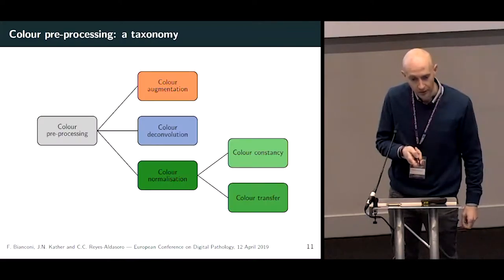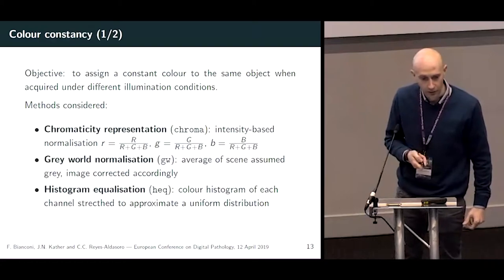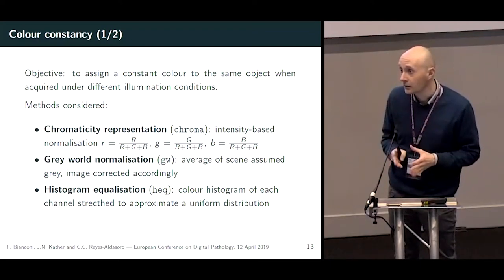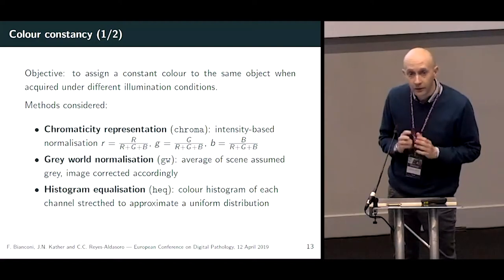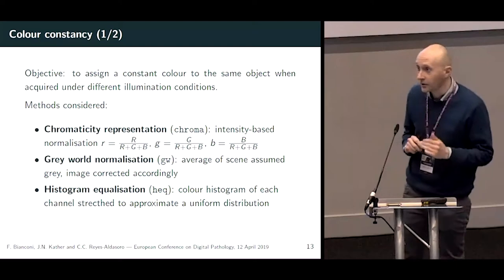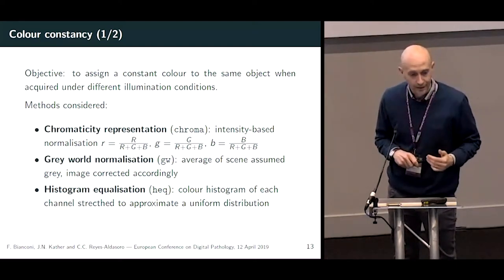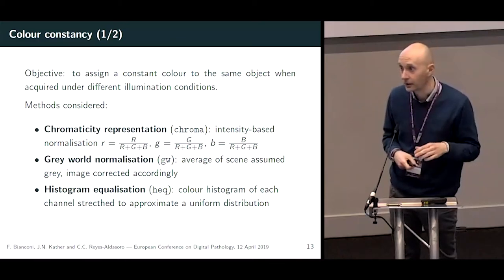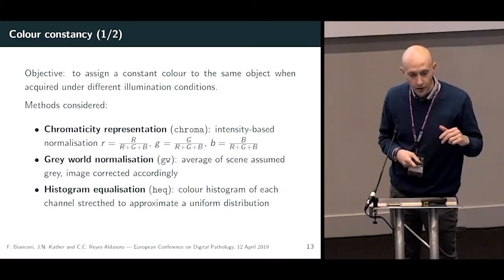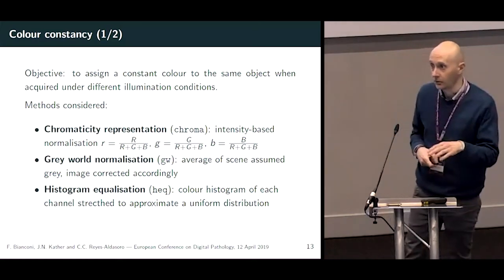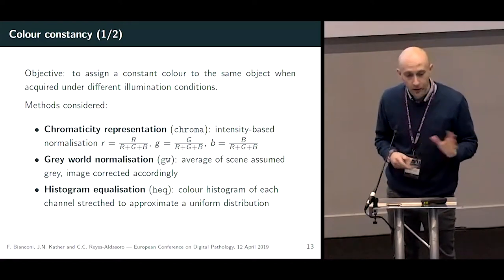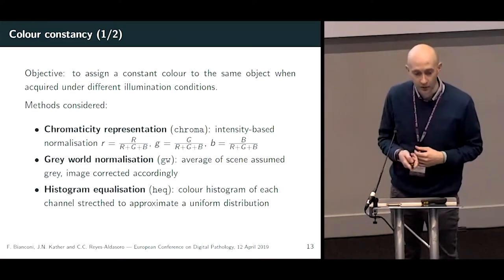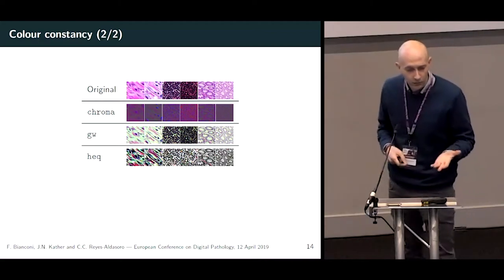Regarding color normalization, let's talk about color constancy. This is the process whereby we try to assign a constant color to the same object when acquired under different illumination conditions — a subject much studied in object recognition. We consider three different methods: a chromaticity representation, which is intensity-based normalization; gray world normalization, based on the assumption that the average color in a scene is gray; and histogram equalization, which consists of stretching the intensity distribution of each color channel.